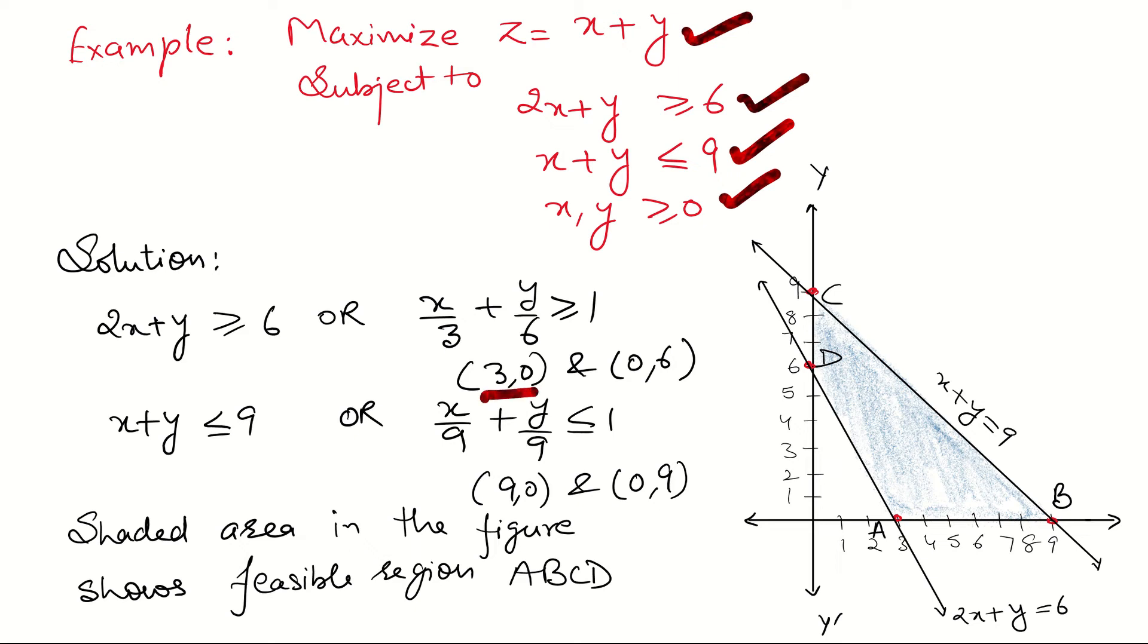First we convert this inequality into intercept form and we get points (3,0), (0,6), (9,0), and (0,9). After plotting these points on the graph and drawing the figure, we get shaded area ABCD.